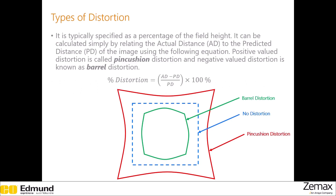The two most commonly observed distortion types are positive, or pin-cushion distortion, and negative, or barrel distortion.